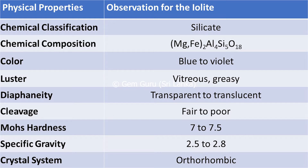The color is blue to violet, and the luster is vitreous or greasy. Diaphaneity may be transparent to translucent. The cleavage may be fair or poor — it may have some cleavage planes, or sometimes it is very difficult to see the cleavage planes. It has a hardness of 7 to 7.5 on the Mohs scale, a specific gravity varying between 2.5 to 2.8, and the crystal system belongs to the orthorhombic system.